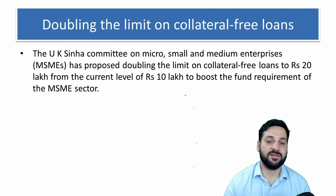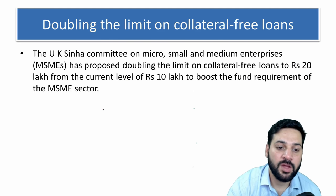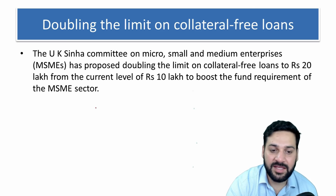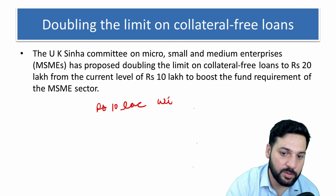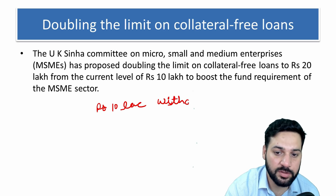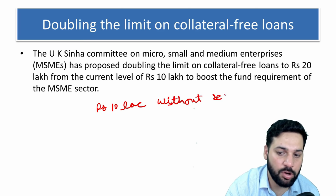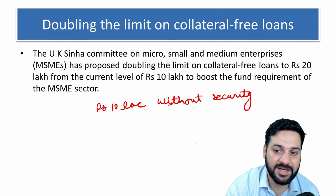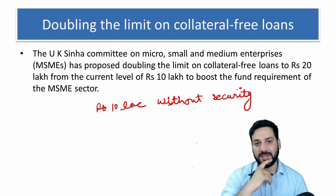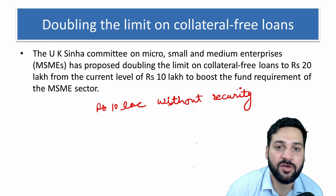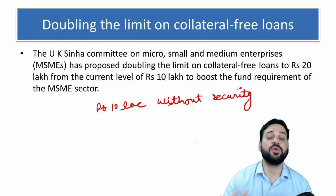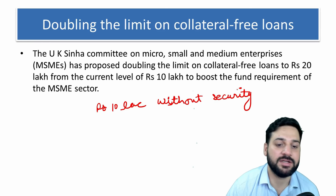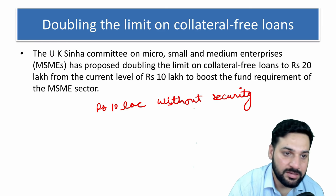Currently, banks can give loans up to rupees 10 lakh without any security or collateral. This is the current limit. If you go to a bank for a Mudra loan, the maximum loan you can get without any security or collateral is 10 lakh rupees.